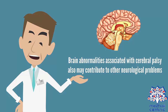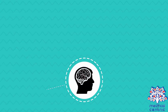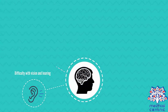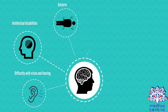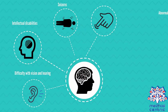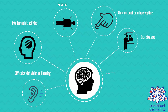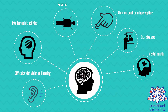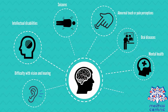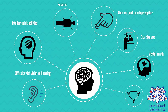Brain abnormalities associated with cerebral palsy also contribute to other neurological problems. People with cerebral palsy may also have difficulty with vision and hearing, intellectual disabilities, seizures, abnormal touch or pain perceptions, oral diseases, mental health and psychiatric conditions, and urinary incontinence.